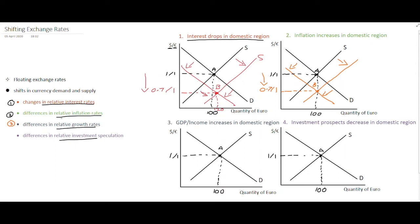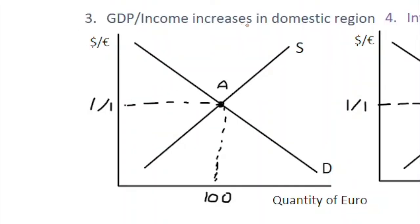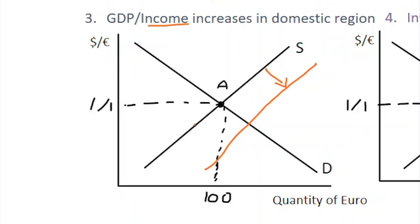In example three, we look at relative growth rates, specifically GDP or income increasing in the domestic region — the euro area. If GDP increases in the euro area, when income rises, generally so does the amount of imports we buy — the propensity to import. If income is increasing, people will buy more imported goods. To buy more imported goods, you supply your currency onto the international exchange market — getting rid of your euros and exchanging them for other currencies, such as the US dollar.